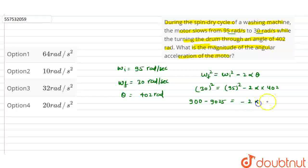So the value will be -8125. This equals -2 × 2α × 402. After canceling the negative signs, 8125 = 2 × α × 402.